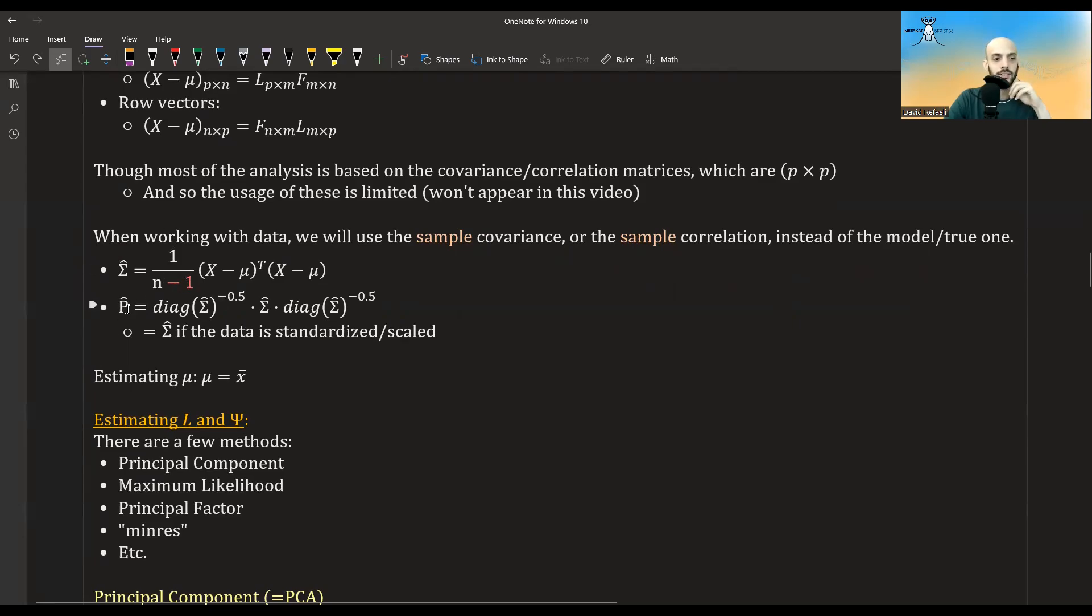And then the estimate of the correlation matrix, capital rho, will just be this covariance matrix multiplied by the inverse of the diagonal of it on both sides.